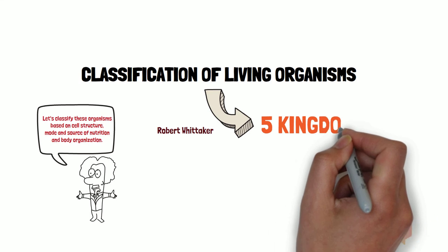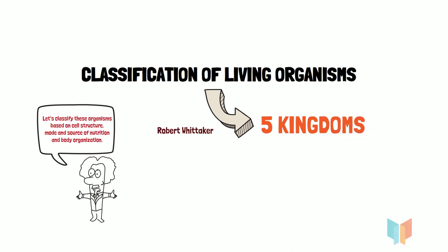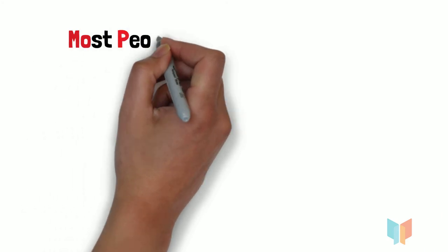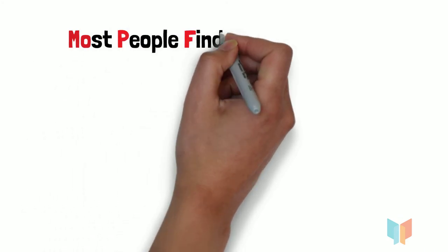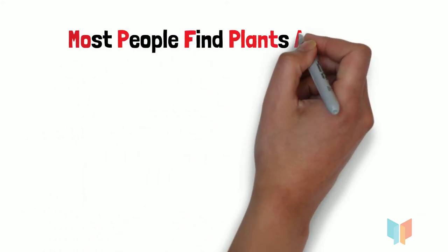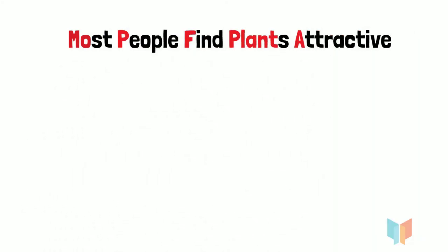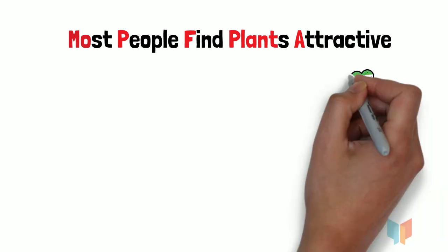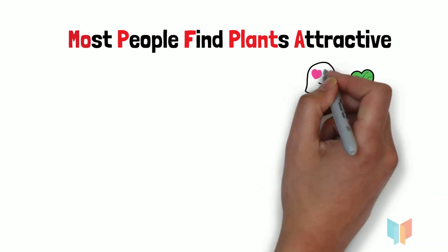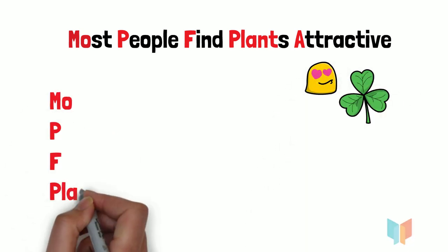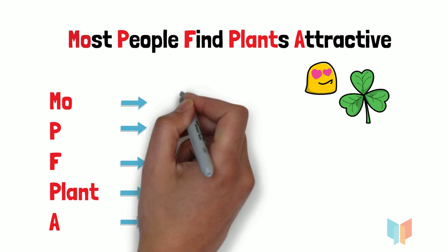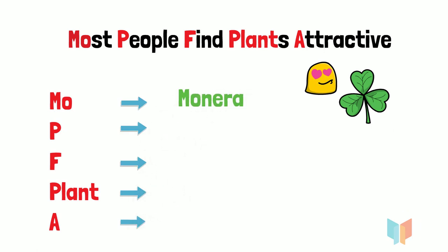We are going to learn these kingdoms with the help of a simple sentence: 'Most people find plants attractive.' The highlighted parts of the sentence stand for each kingdom. MO stands for Monera.